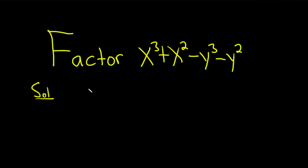We have x cubed minus y cubed. Group these. And then plus x squared minus y squared. So just grouping this and this and this and this.